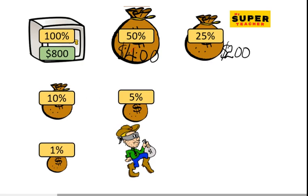And 10% will be one tenth—one tenth of $800—and that's $80.